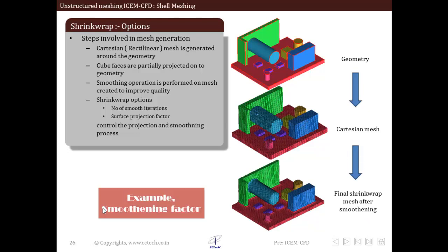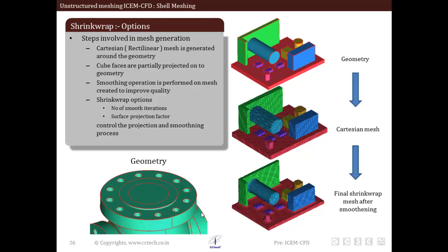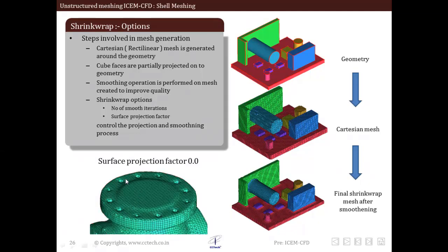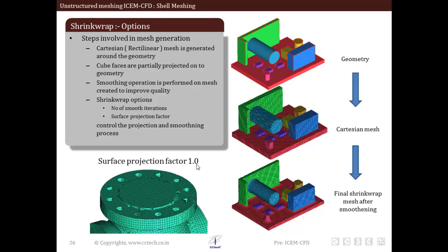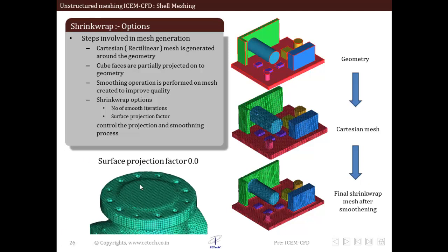If we look at the smoothening factor: with a surface projection factor of 0, the mesh is free. If we make it 0.5, it will try to capture the geometry. If we make it 1, it will try to capture the geometry much better. So you can see the difference between values 0, 0.5, and 1.